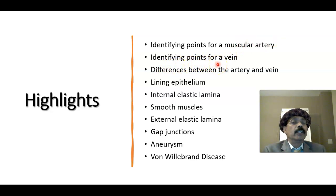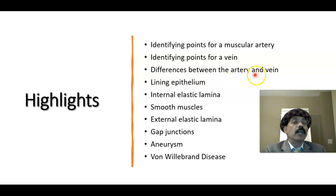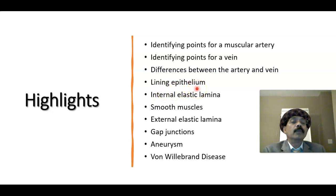The internal elastic lamina and the thick tunica media containing several layers of muscle are key identifying features, along with the tunica adventitia containing vasa vasorum. All three layers — tunica intima, tunica media, and tunica adventitia — are present, but tunica media is very thick. To differentiate artery from vein: artery has thick walls and a circular shape, while the vein has thin walls and is collapsible. Endothelial cells communicate with underlying smooth muscle through fenestrations of the internal elastic lamina via gap junctions, and gap junctions also exist between smooth muscle cells.